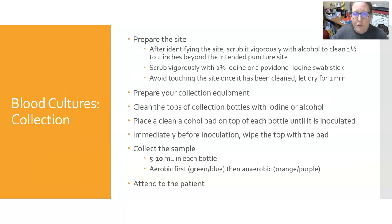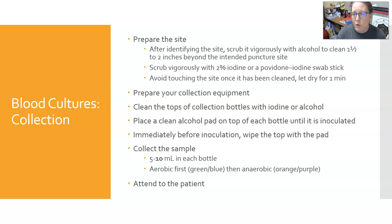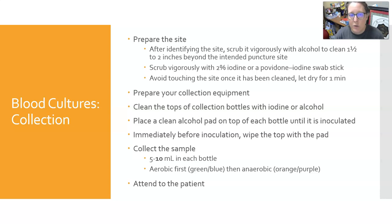After identifying the phlebotomy site, scrub it vigorously with alcohol, cleaning one and a half to two inches beyond the intended puncture site. Follow that by scrubbing vigorously with 2% iodine or a povidone-iodine swab stick. Absolutely avoid touching the site once it has been cleansed, and let it dry for at least one minute. Remove the tourniquet — do not leave it on — and reapply it, but the patient needs to keep their arm outstretched and not move it.